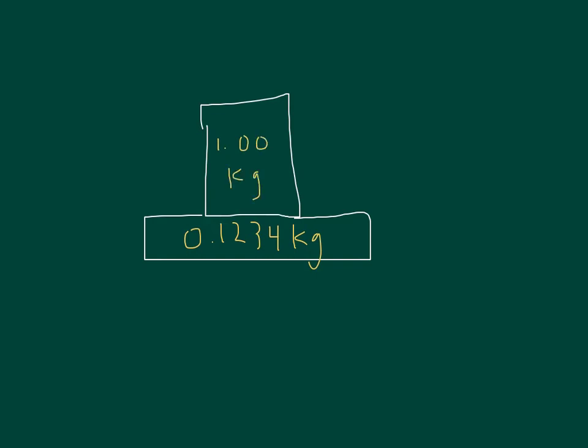So now if we want to calculate the force of gravity for a free body diagram, it's M times G. Our M will be the combined masses of the wooden block and the one kilogram mass sitting on top.